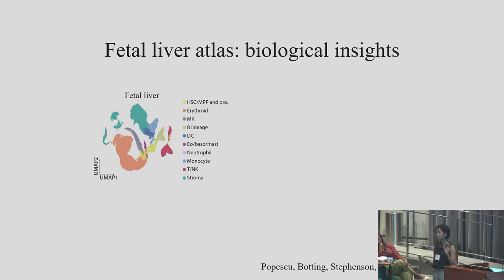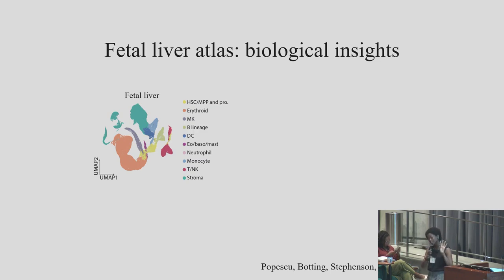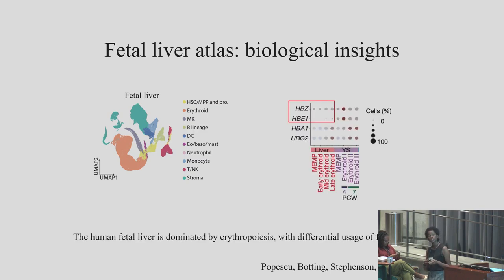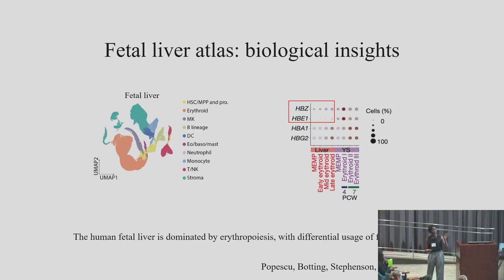Moving to the fetal liver atlas — qualitatively you can see a lot of erythroid cells in orange. The main takeaway is that in the second trimester the fetus is really prioritizing laying down oxygen transport, which is crucial at this time window. We zoomed into this population and separated out different stages of erythroid differentiation. Combining it with the yolk sac data, we looked into hemoglobin subunit usage: fetal subunits Zeta and Epsilon 1 were significantly lower in the liver, showing how this system is patterned across tissues.